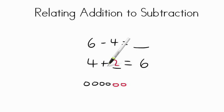I had to go up two more. So, if four plus two equals six then the missing number six minus four must be two.